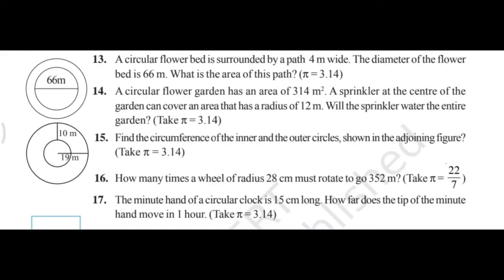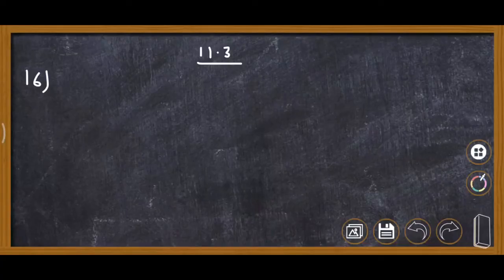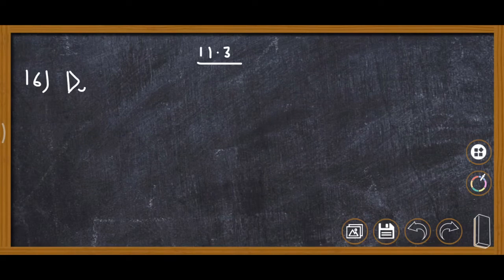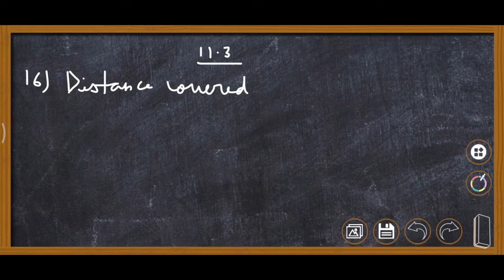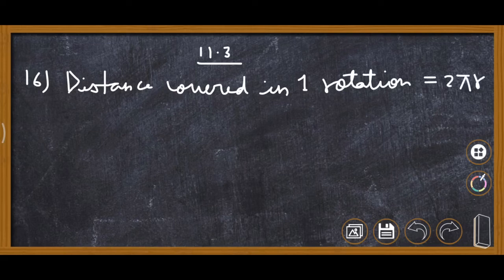This is question number 16. How many times must a wheel of radius 28 centimeter rotate to go 352 meter? First we will find the circumference of the wheel, and then find the number of rotations by dividing 352 meter by the circumference. The distance covered in one rotation is equal to the circumference of the circle, that is 2 pi r.